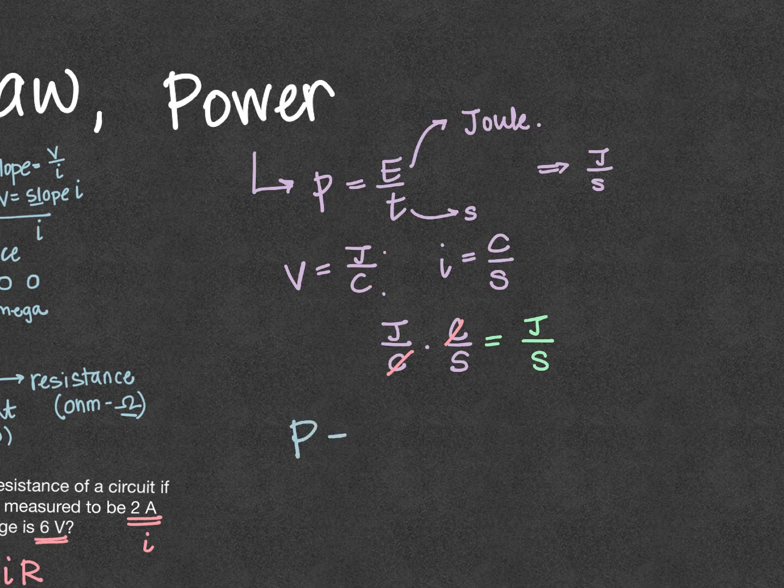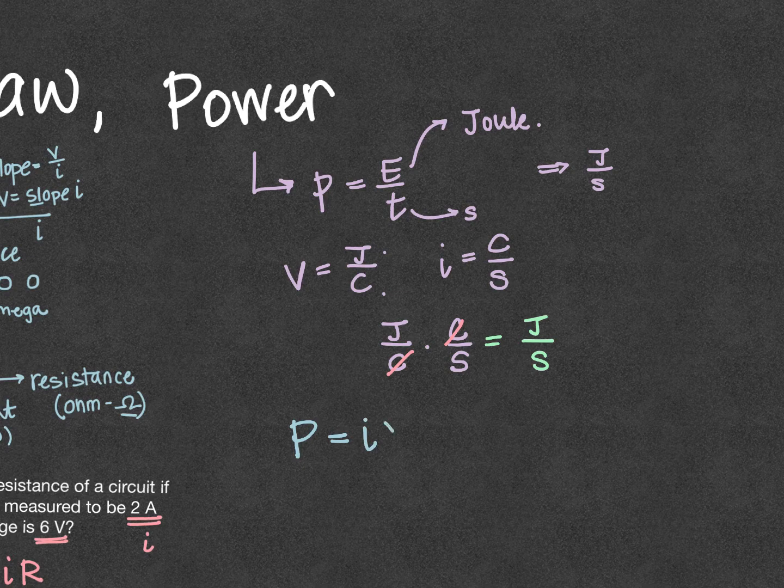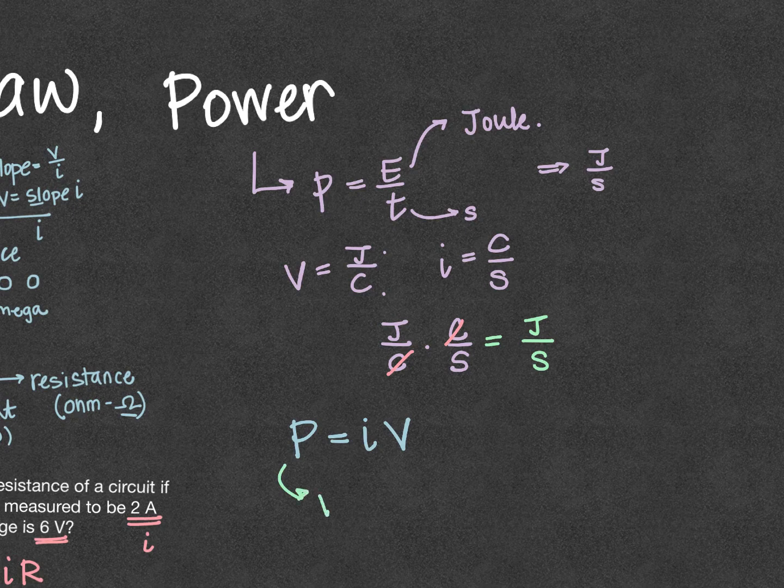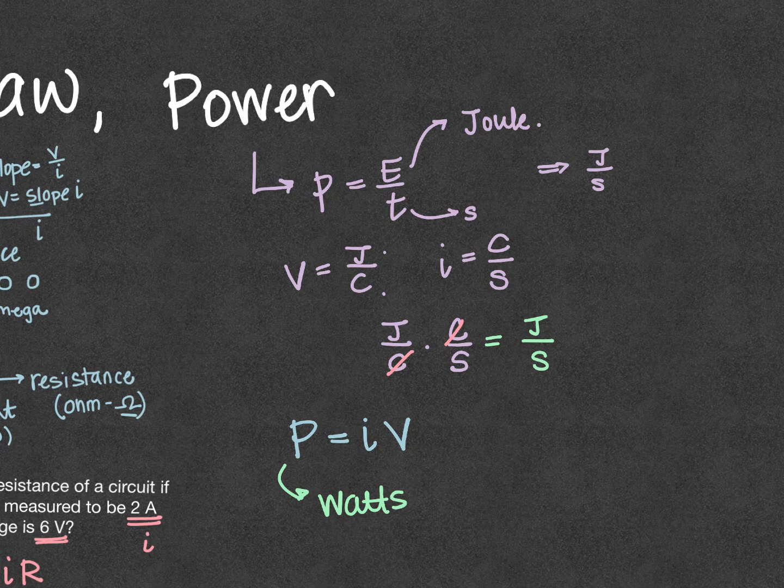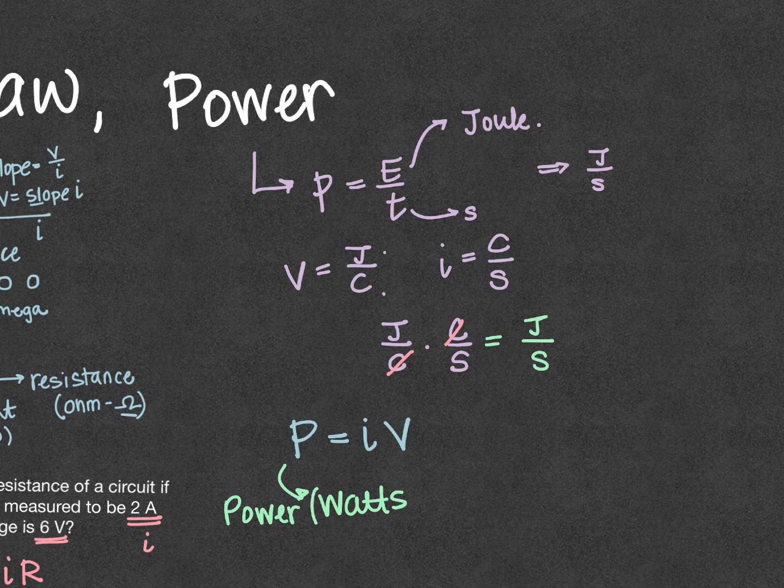So that means for electrical power, we can write our equation as power equals I times V. So our power is still measured in watts. And remember, a watt is still the joule per second.